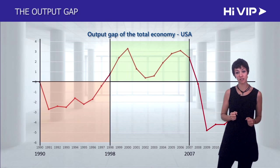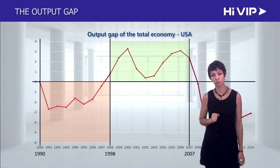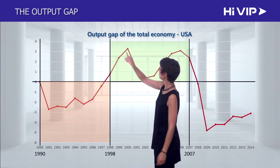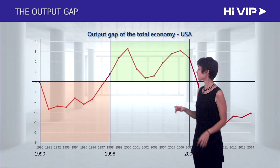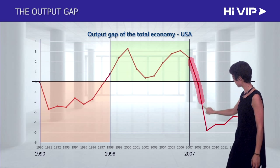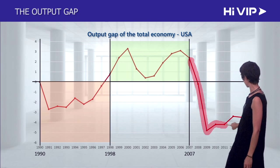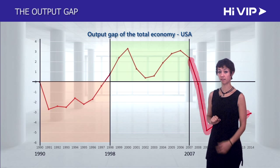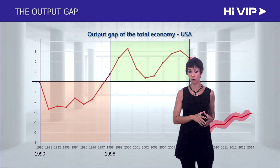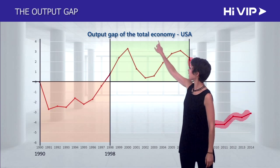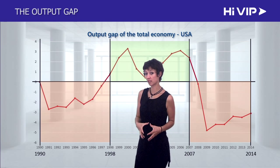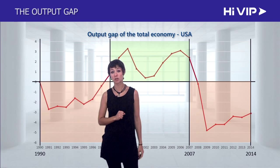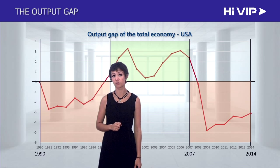Later on we'll think about this and realize that this was a problem. Then you can see the financial crisis hits at the end of 2008, and we drop from a positive output gap to a negative output gap — we are growing too slow, less than potential. This continues up into the present, and even according to the OECD, it will continue till 2014.